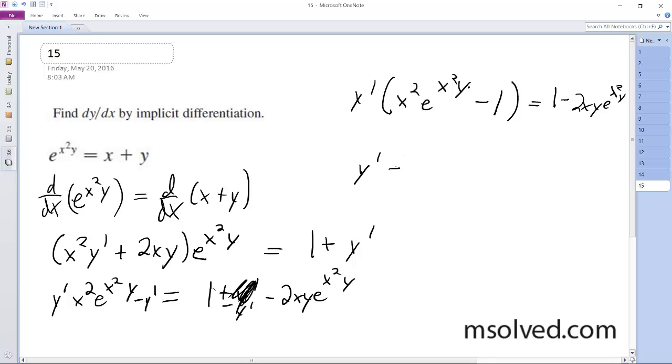So y' is equal to, finally, (1 minus 2xy e^(x²y)) divided by (x² e^(x²y) minus 1). That's it.